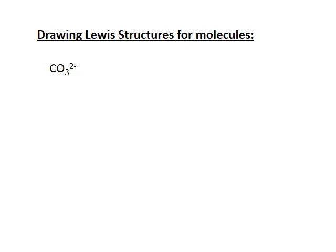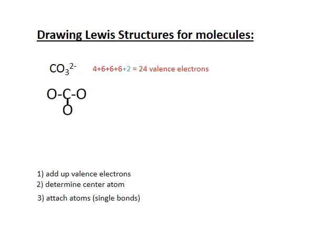For the carbonate ion (CO₃²⁻), there's a negative two charge, so two extra electrons are added to the count. Carbon has four valence electrons, each oxygen has six, plus two for the charge — 24 valence electrons total. Carbon goes at the center because it's different from the three oxygens; it's also further from fluorine and larger than oxygen, since atomic size increases from right to left across a period.